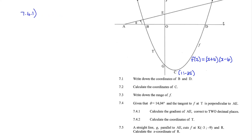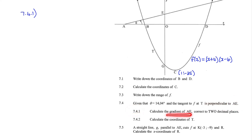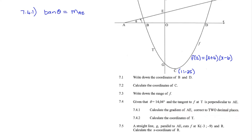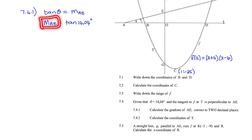Question 7.4: Given that theta is 14.04 degrees and the tangent of f at T is perpendicular to AE. First, calculate the gradient of AE correct to two decimal places. From the theory of angle of inclination, tan theta equals the gradient of a line. So the gradient of line AE is tan(14.04 degrees), which equals 0.25.